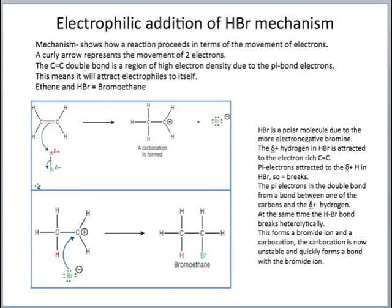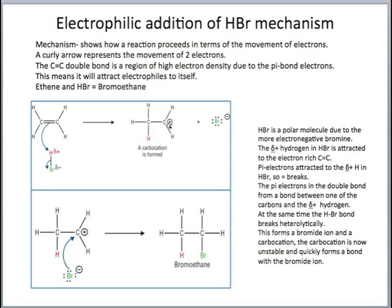Let's look at the mechanism using the example of ethene reacting with hydrogen bromide to produce bromoethane. Hydrogen bromide is a polar molecule due to the more electronegative bromine, which gives it a delta negative sign, while the hydrogen is delta positive. The hydrogen, because of its slightly positive charge, is attracted to the electron-rich double bond. The pi electrons are also attracted to the delta-positive H in HBr, causing the double bond to break, shown by the curly arrow. At the same time, a bromide ion is formed, and the carbon bears a positive charge — this is known as the carbocation.